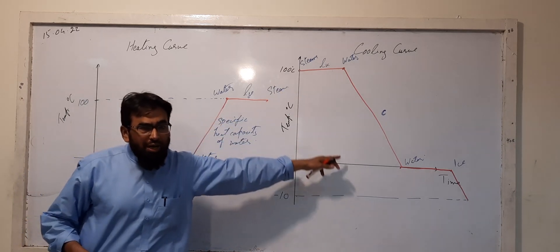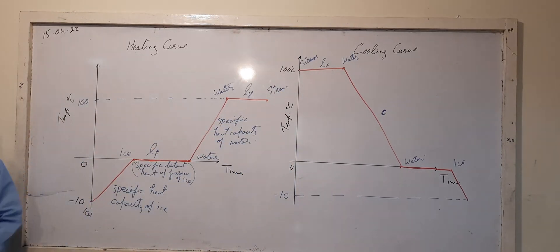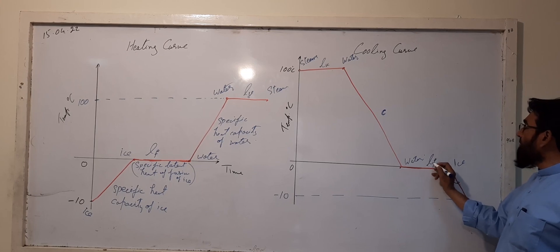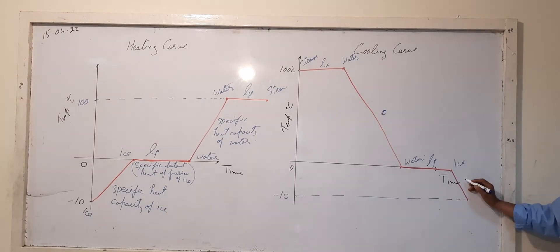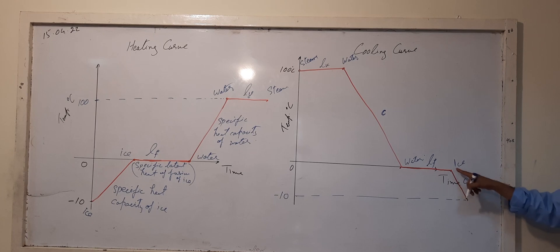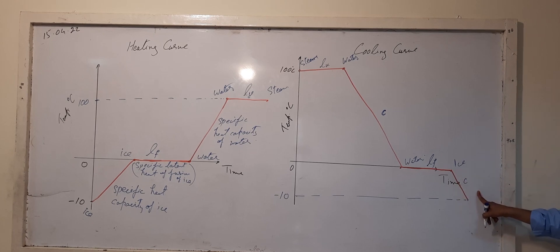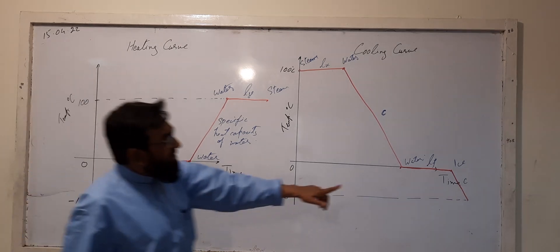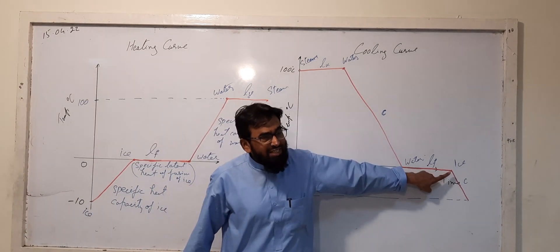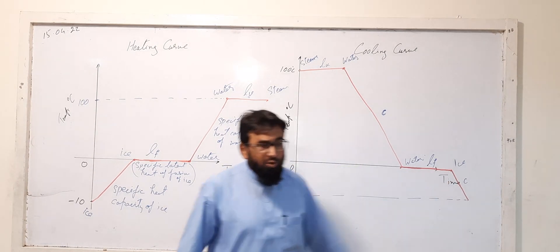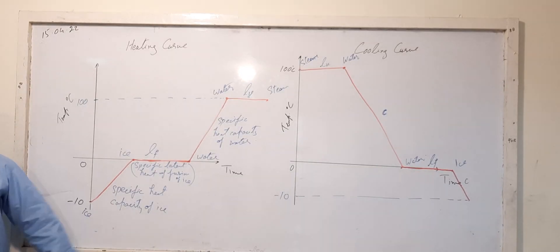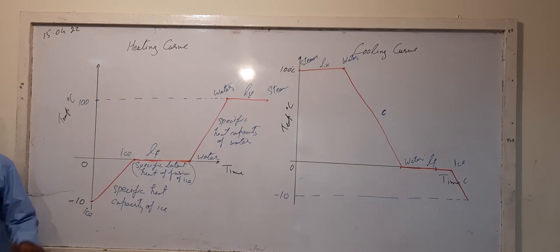This is basically the cooling curve, and the earlier one is the heating curve. Here, latent heat of fusion will be applied. And for the final section, the specific heat capacity of ice will be involved, since it is ice at that point.